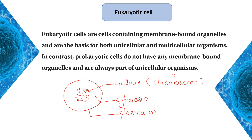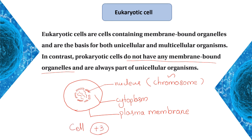This is the difference between prokaryotic and eukaryotic cells. Prokaryotic cells do not have membrane-bound organelles. This is a key distinction between the two cell types.